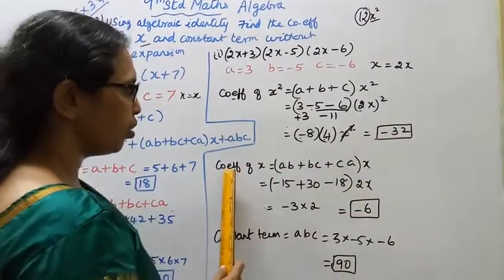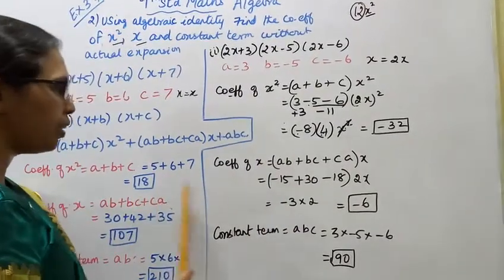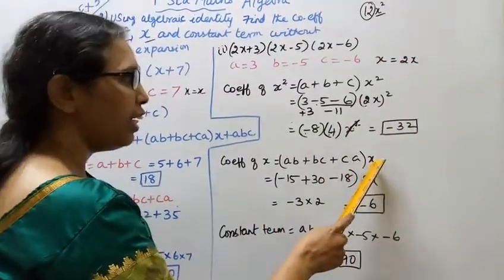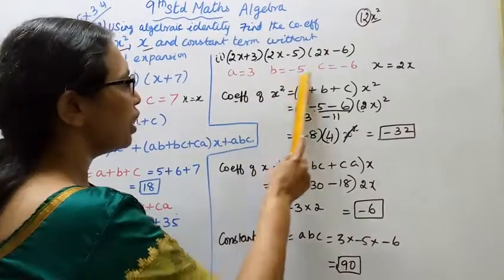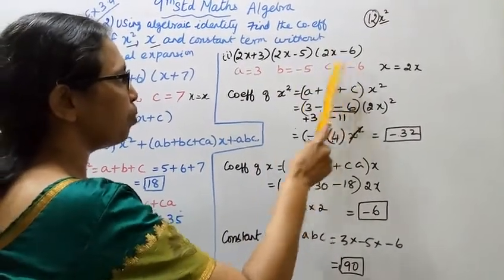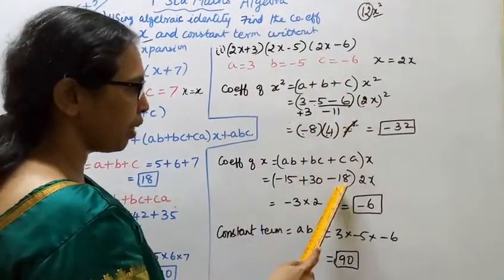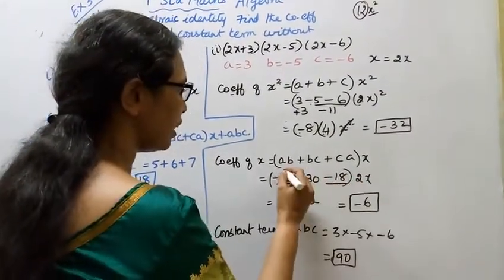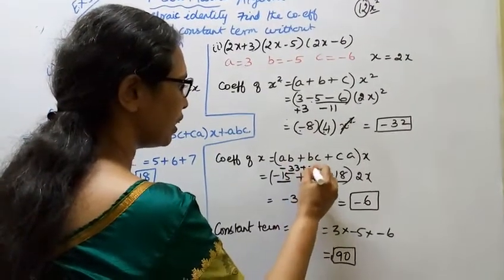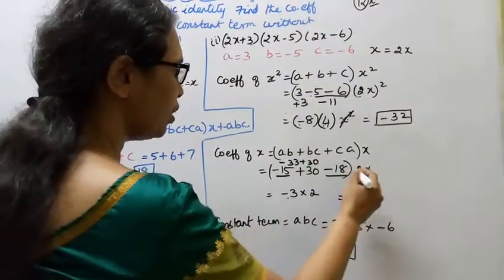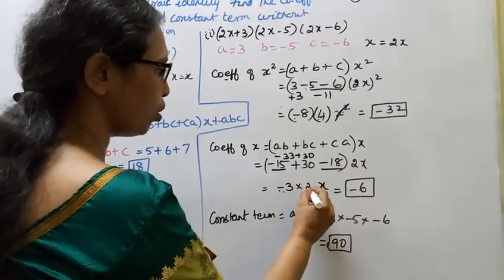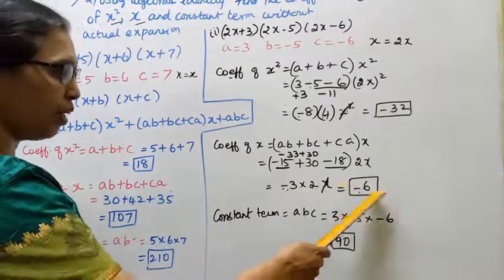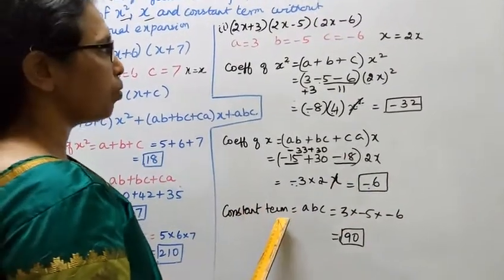Coefficient of x equals ab plus bc plus ca, but since x is replaced by 2x, we multiply by 2. So: 3 times minus 5 is minus 15, minus 5 times minus 6 is plus 30, and 3 times minus 6 is minus 18. Summing: minus 15 plus 30 minus 18 equals minus 3. Then minus 3 times 2 equals minus 6. Coefficient of x is minus 6.